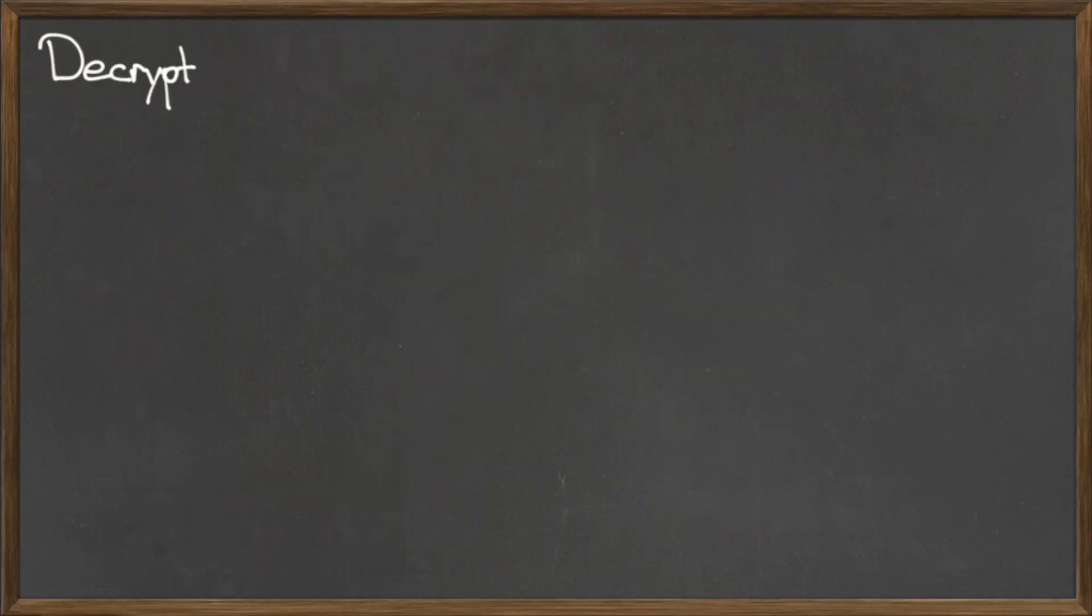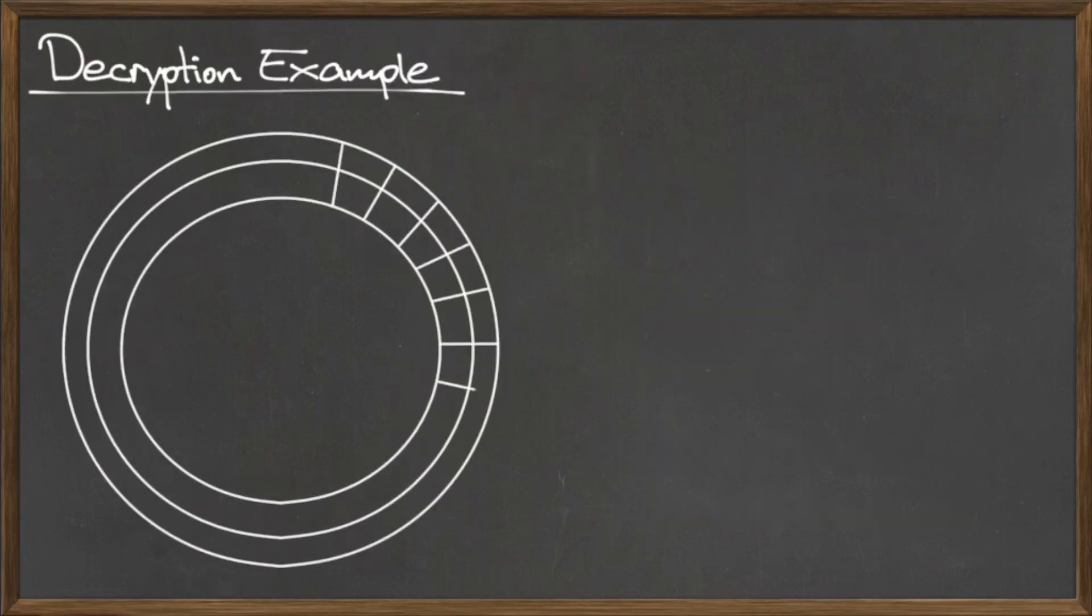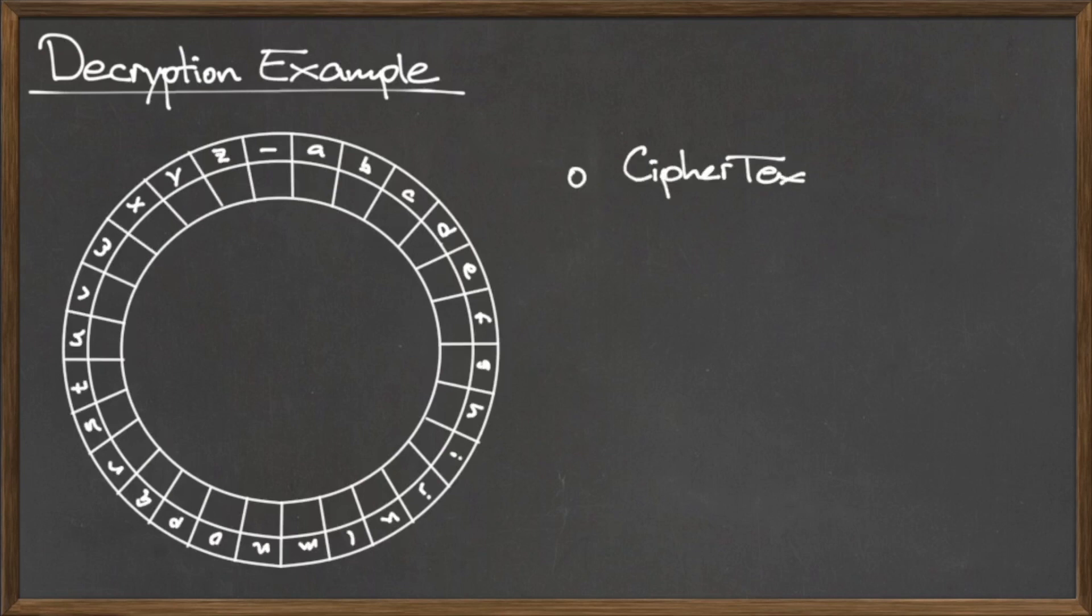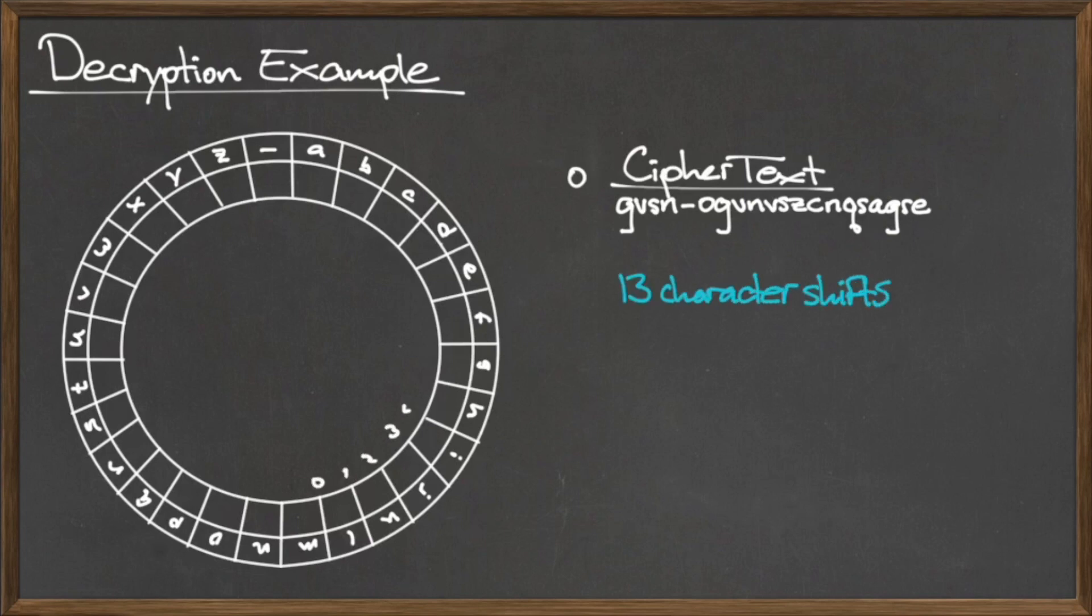Now let's do a different example, where instead we want to decrypt a given ciphertext. Suppose that we were given the following ciphertext, and told that it was encrypted using a Caesar cipher with a 13 character shift. Starting from the home position, we spin the inner ring of our decoder disk 13 characters clockwise to match the encryption cipher.